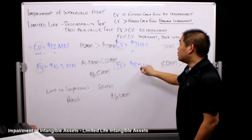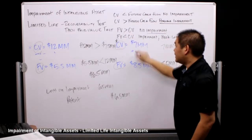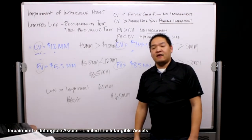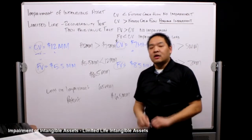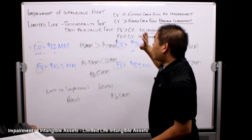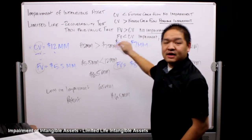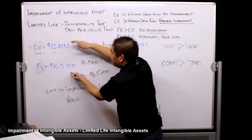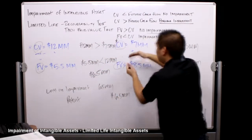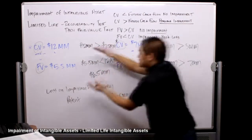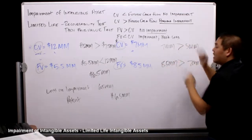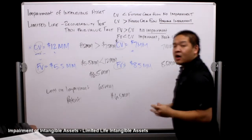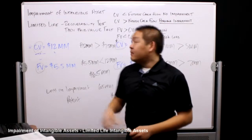In the second example, the fair value of eight point five million is more than the carrying value of seven million, so we have no impairment for the indefinite life asset. To summarize: with an indefinite life intangible asset, we skip the recoverability test and go straight to comparing fair value and carrying value. The first example would still have a loss and the second would still show no impairment.